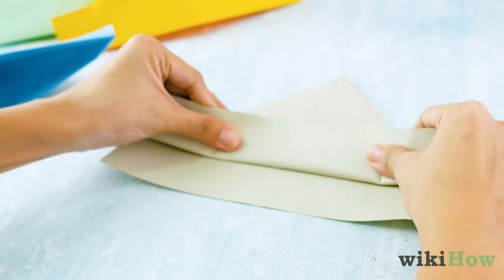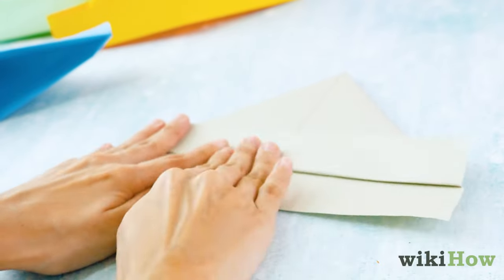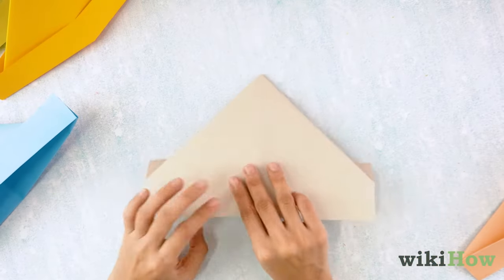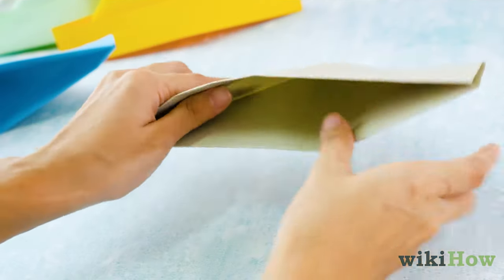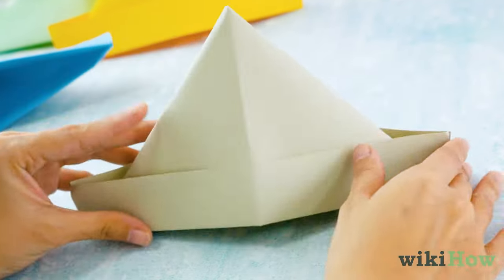Now fold up the top flap along the bottom edge. Flip the paper over and do the same thing on the other side. Finally, pull the bottom edges apart to open up your hat.